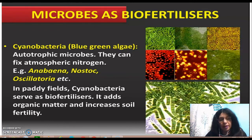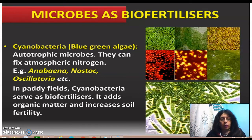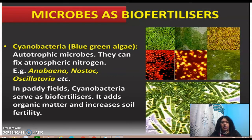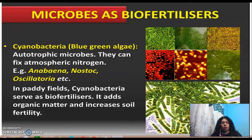We have talked about autotrophic microbes — blue-green algae — which are photosynthetic and can make their own food. They help plants fix nitrogen and provide nutrients. Examples of cyanobacteria that act as biofertilizers include Anabaena, Nostoc, and Oscillatoria. Paddy fields use cyanobacteria as biofertilizers, as they add organic matter and increase soil fertility.